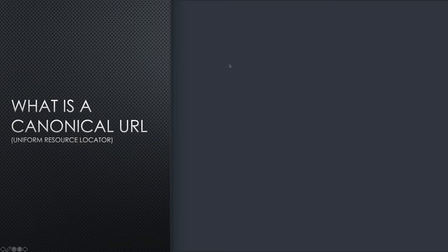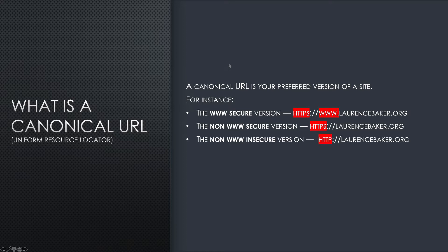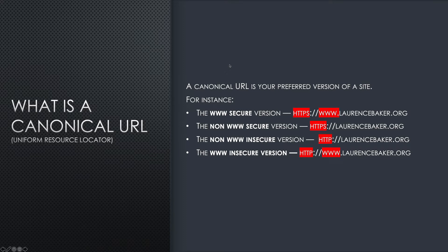What is a canonical URL? I'm only mentioning this because it confuses a lot of people when they start reading about SEO. A canonical URL is your preferred version of a site — it's what you want to be judged on, where you want people to go. For instance, the www secure version has HTTPS and www. The non-www secure version just has HTTPS. A lot of this will be handled by your hosting provider, especially if you've got SSL. They will point the non-secure version at your secure version — that's called a 301 redirect. You hear a lot about 301s — they're redirects to the preferred, canonical version of your site.